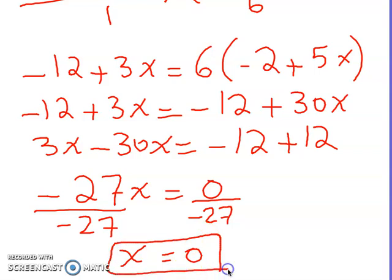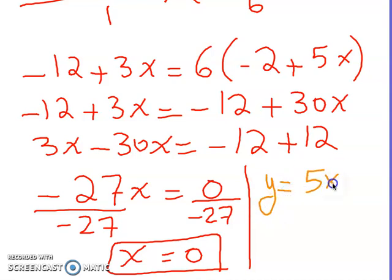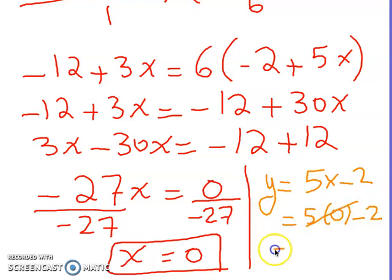After finding x, we find y. We agreed above that y equal five x minus two (the one without a fraction is easier). Substituting x equal zero: y equal five times zero minus two, which gives y equal minus two. So the solution is (zero, minus two).